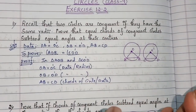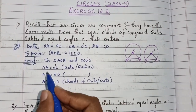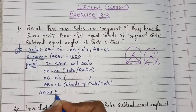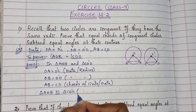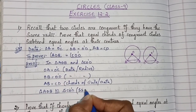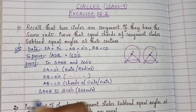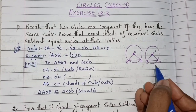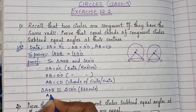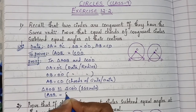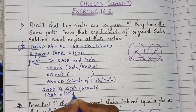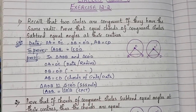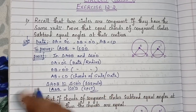By these three equal sides, triangle AOB is congruent to triangle CO'D by the SSS rule. Therefore, angle AOB equals angle CO'D by CPCT — corresponding parts of congruent triangles. That completes the proof for Question 1.